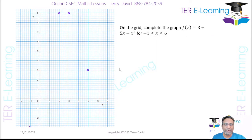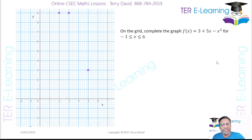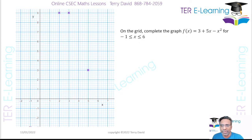The next thing they want us to do is draw the graph of f(x) on the grid — they give us graph paper and I've drawn a clean one here. They want us to draw the graph for the domain from minus 1 to 6, which is essentially what our table is showing. They've already plotted some of the points for us, so we're going to plot the rest. The first point is (−1, −3), and the next one is (0, 3), which is here.